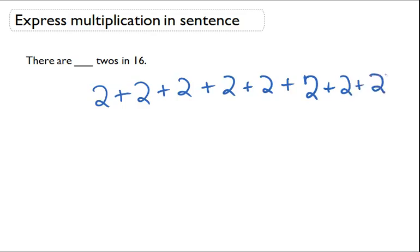So let's count how many 2's we see here: 1, 2, 3, 4, 5, 6, 7, 8. It's going to take 8 twos to make 16.